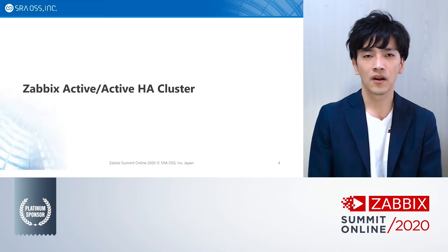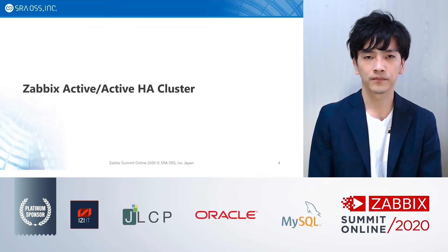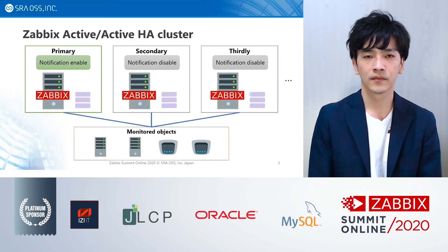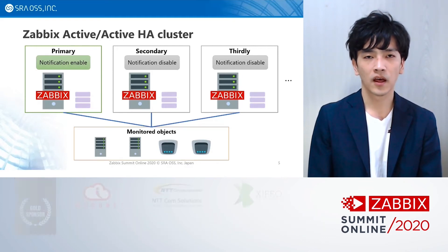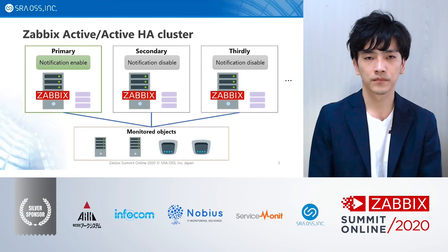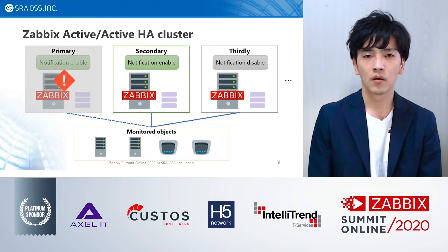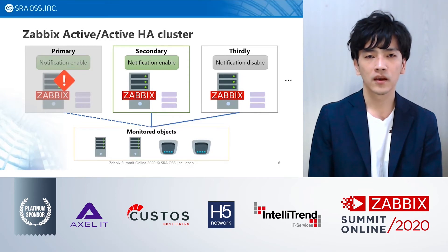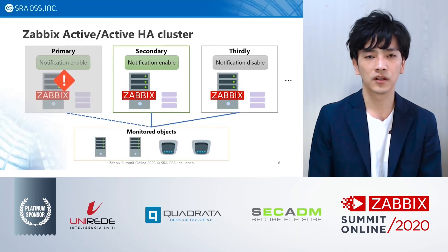Let's look at the Active-Active Cluster. In an Active-Active Cluster, multiple individual Zabbix servers run concurrently, and each Zabbix server monitors the same objects. If one Zabbix server goes down, monitoring can be continued by the other servers. In an Active-Active Cluster, only notifications belonging to a primary server should be enabled to prevent redundant notifications.